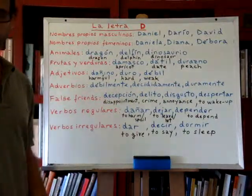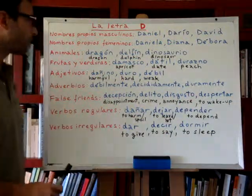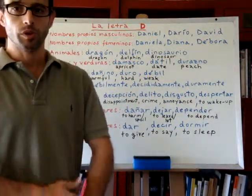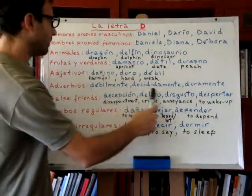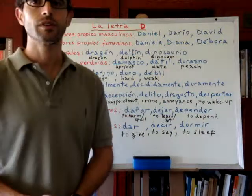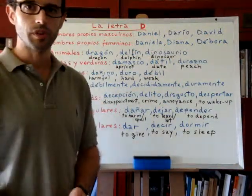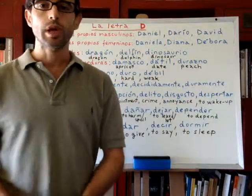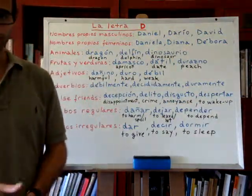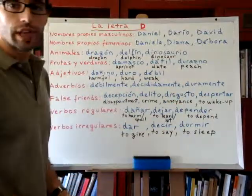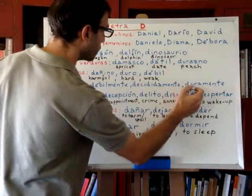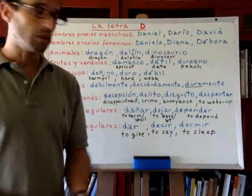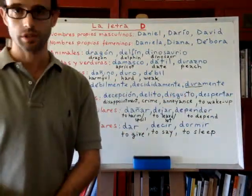Now we will see some adverbs. We have débilmente — weakly, with no strength. We have decididamente — decidedly, or with determination. And we have duramente — harshly. Duramente is the adverb that comes from the adjective duro, meaning hard, but as an adverb it means harshly.